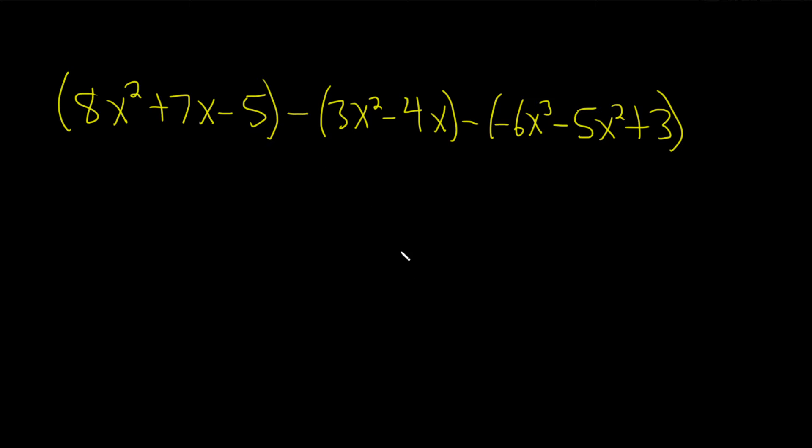Okay, let's start by getting rid of all these negatives. There really is a 1 here and there's a 1 here. There's also a 1 here but it doesn't really matter because when you take 1 and you multiply by all of this, you just get this. So we can drop the parentheses here, 8x squared plus 7x minus 5.